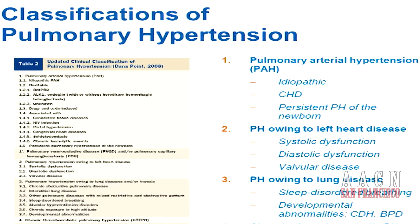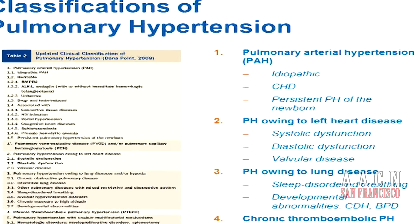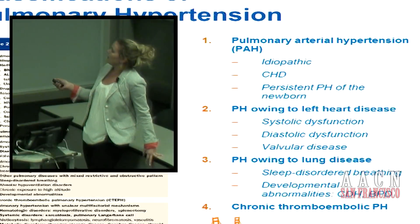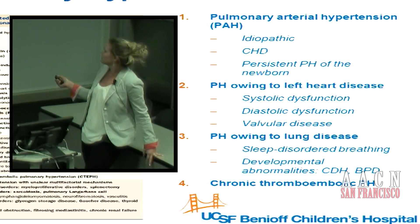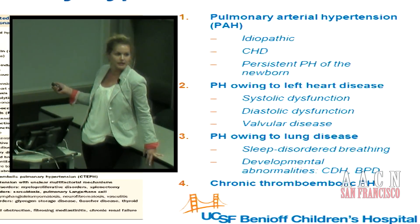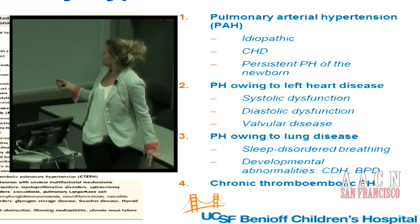There are five classification groups for pulmonary hypertension. Group one is pulmonary arterial hypertension — this is where the difference between PAH and PH comes from. Group one includes idiopathic pulmonary hypertension, pulmonary hypertension related to congenital heart disease, and persistent pulmonary hypertension of the newborn. There are also associations with connective tissue disease, HIV, and portal hypertension, but in pediatrics we see a lot with congenital heart disease and persistent pulmonary hypertension of the newborn.